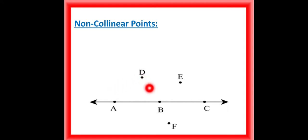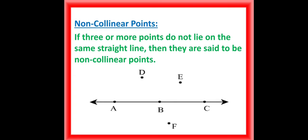So in this case we can say that the points A, D, B, F, E, and C are non-collinear points. We can say that three or more points that do not lie on the same straight line are non-collinear points.